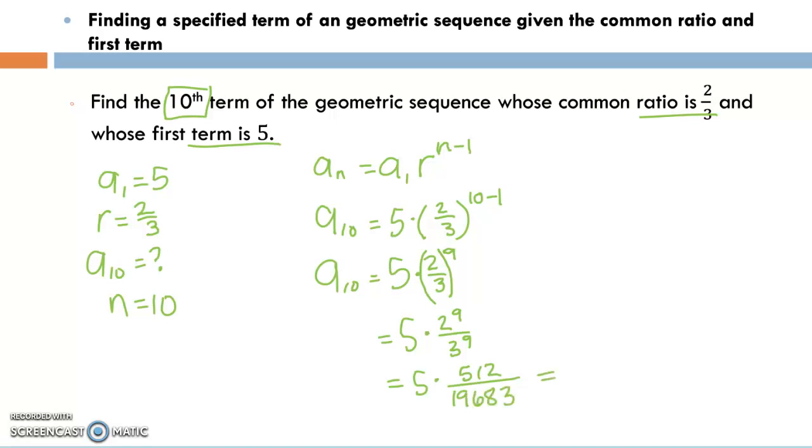So this tenth term is five times five hundred and twelve which is two thousand six hundred and five divided by nineteen thousand six hundred and eighty three. So this is equal to my tenth term.